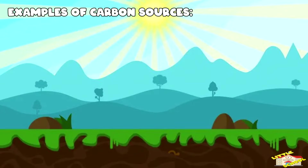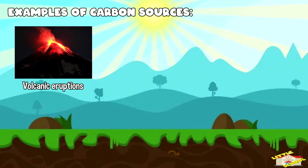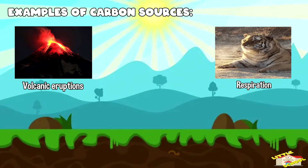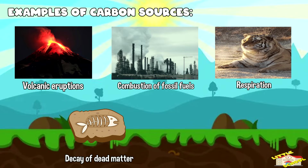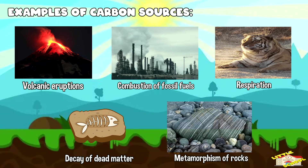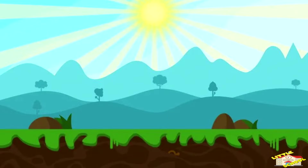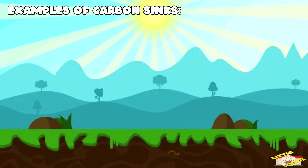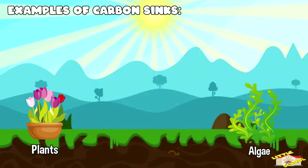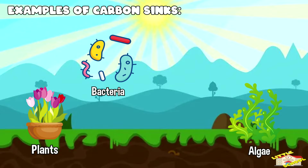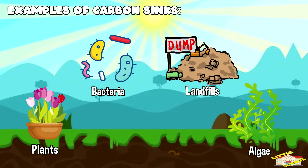Examples of carbon sources are volcanic eruptions, respiration of animals and humans, decay of dead matter, combustion of fossil fuels, and natural processes like the metamorphism of rocks. Examples of carbon sinks include plants, algae, a few strains of bacteria, and landfills.